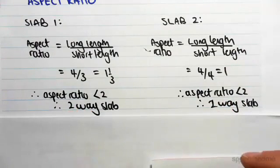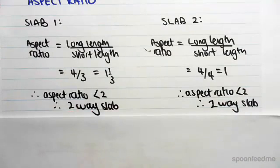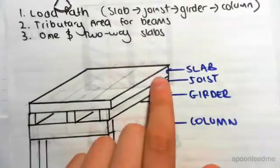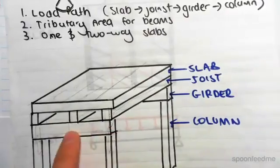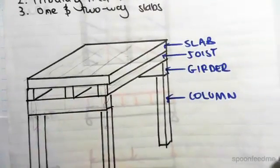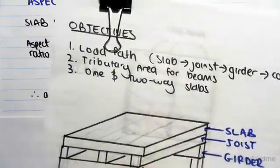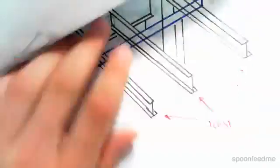Now it's very important to discuss this. In the previous example, the load path, because it was a one-way slab, was loading from slab to interior beams or joists to exterior beams or girders then into column. But we're now saying that our structure behaves like a two-way slab.